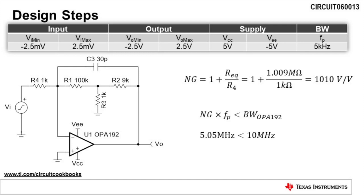The noise gain NG is equal to 1 plus Req divided by R4 and is calculated to be 1010 volts per volt. The noise gain times the bandwidth Fp must be less than the gain bandwidth product of the OPA192. Since 5.05 megahertz is less than 10 megahertz, the OPA192 has sufficient bandwidth for this design.